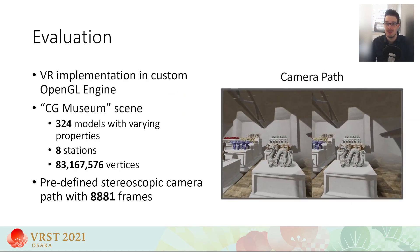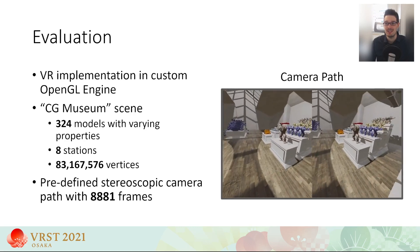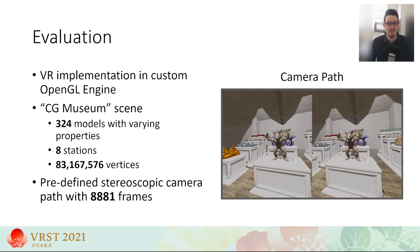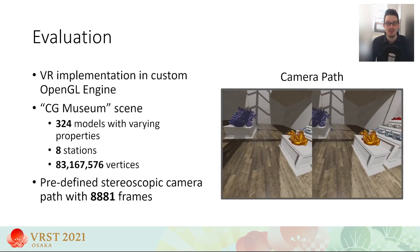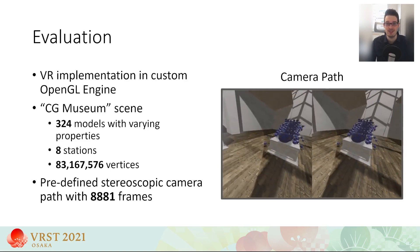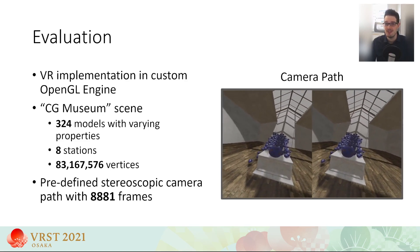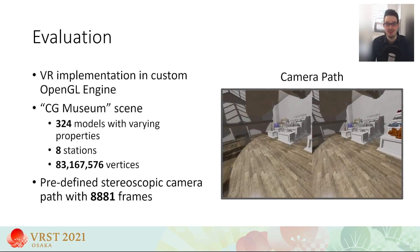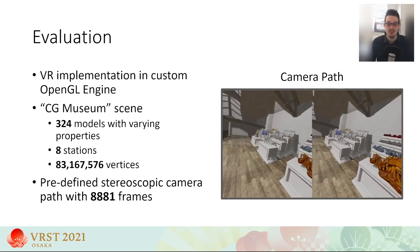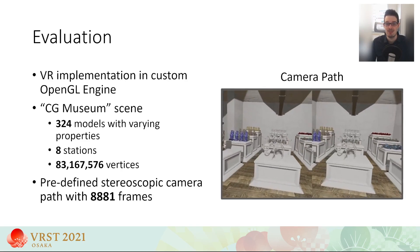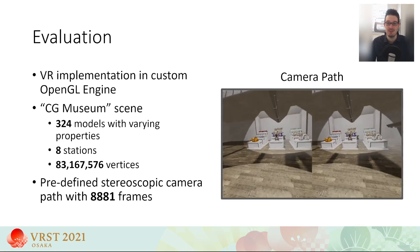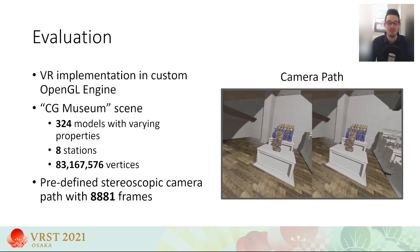We implemented a VR version of our rendering technique and evaluated it using a computer graphics museum test scene. This scene contains a total of 324 3D models with varying geometric and material properties. The models have roughly 83 million vertices and are spatially grouped together into 8 different stations. We captured a stereoscopic image sequence of approximately 9000 frames and used it in our performance and image quality comparisons. In the following evaluations, we will compare our impostor-based rendering system against the classic mesh-based rendering approach. Our impostor-based system replaces all 324 models in the scene with stereoscopic impostors and updates them as necessary.